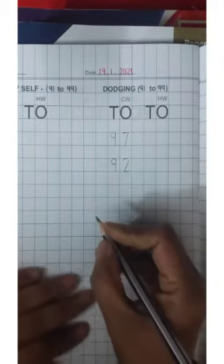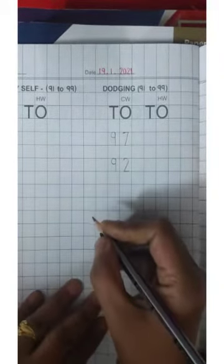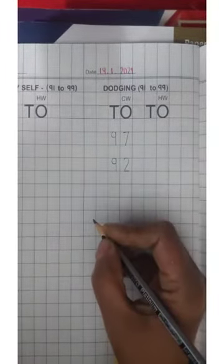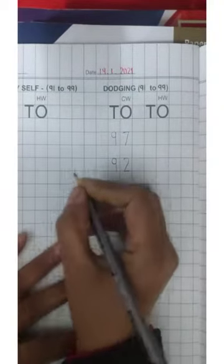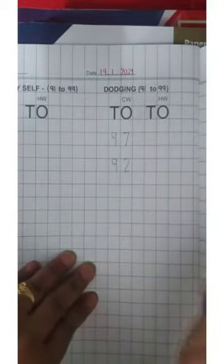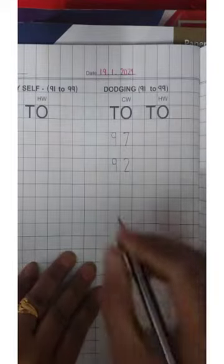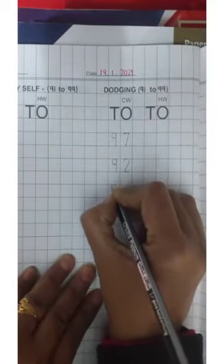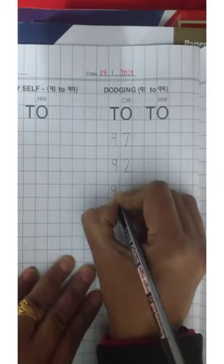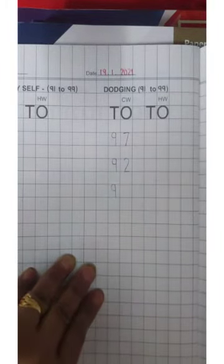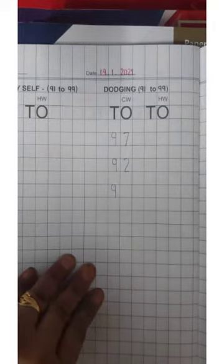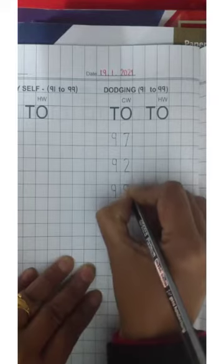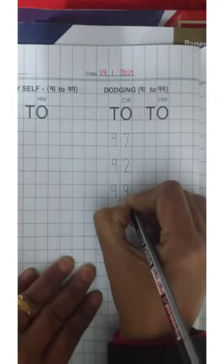Now next number ma'am is taking 99. 99. How to write 99? First you will write 90 sound is coming. 90 sound is coming. First you write 9. Again ma'am is saying 9. 99. Again you will write 9 under the ones place. 99.